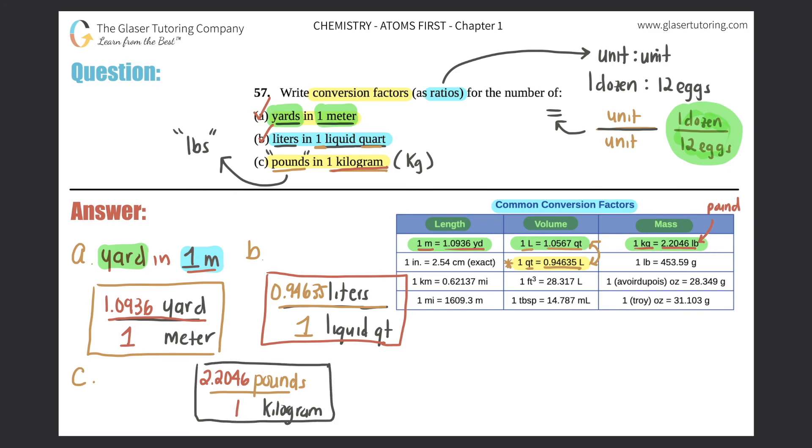And those are all your answers. Now knowing how to use these conversion factors and knowing how to write your ratios is super important because that's how we're going to be doing our conversions when we do actual math, when we start multiplying numbers. But just for right now, just focus on how to actually write the ratios.